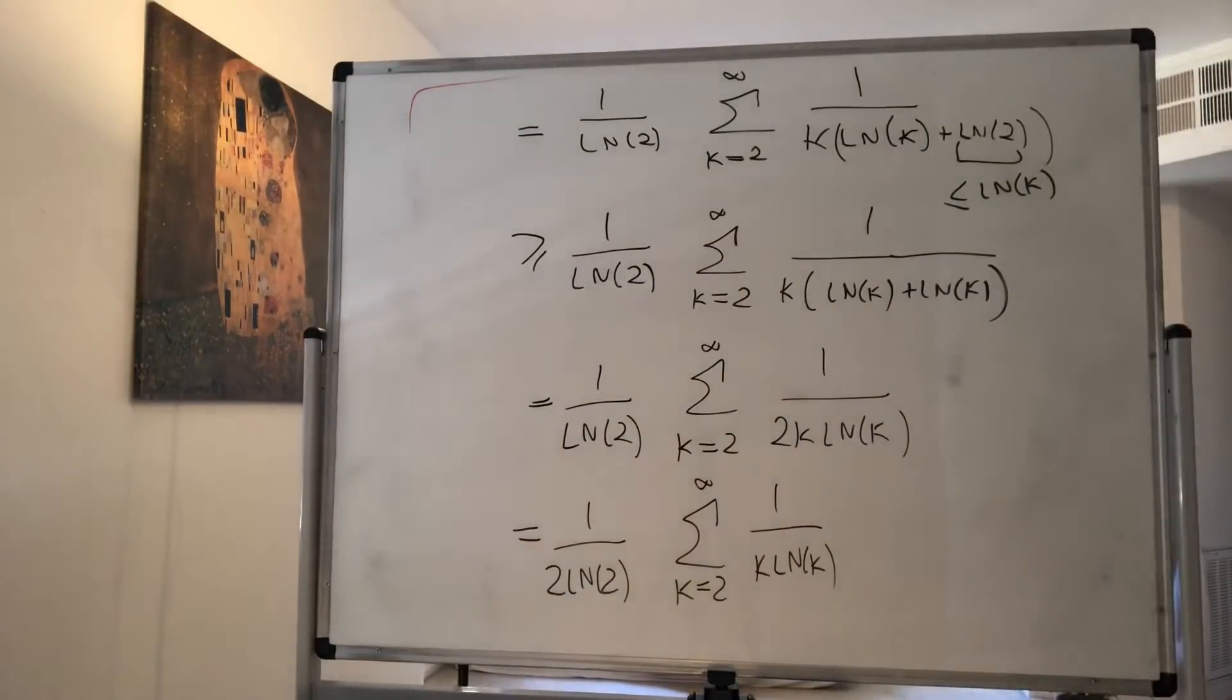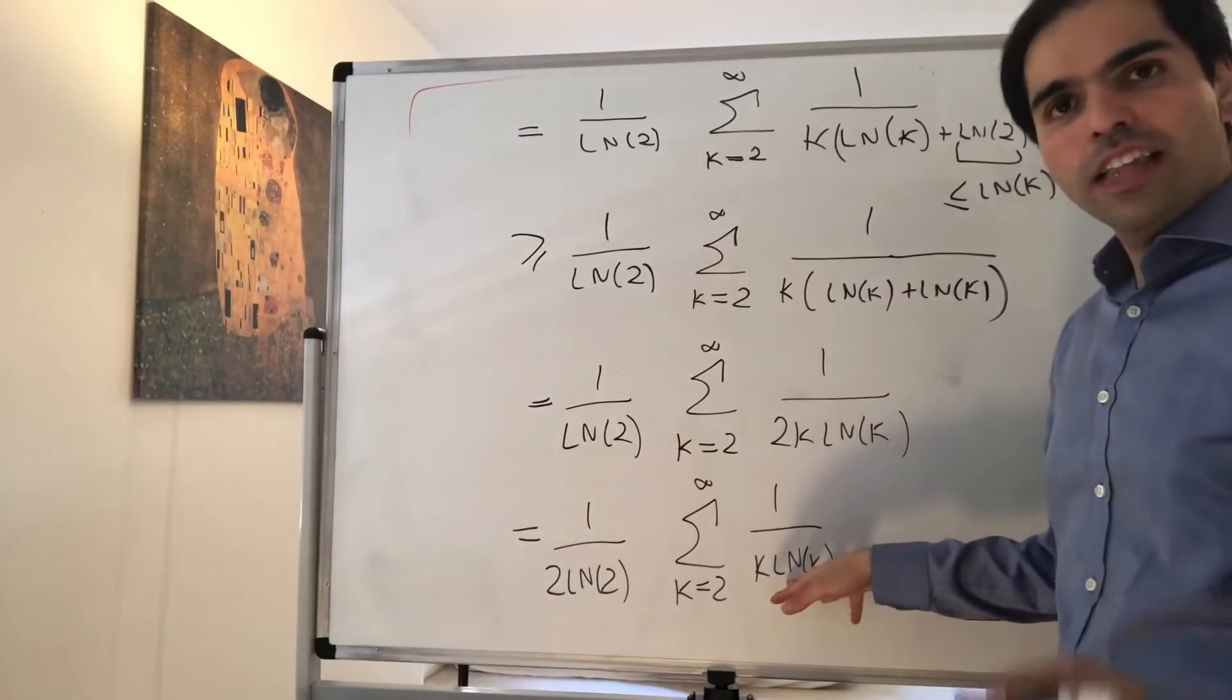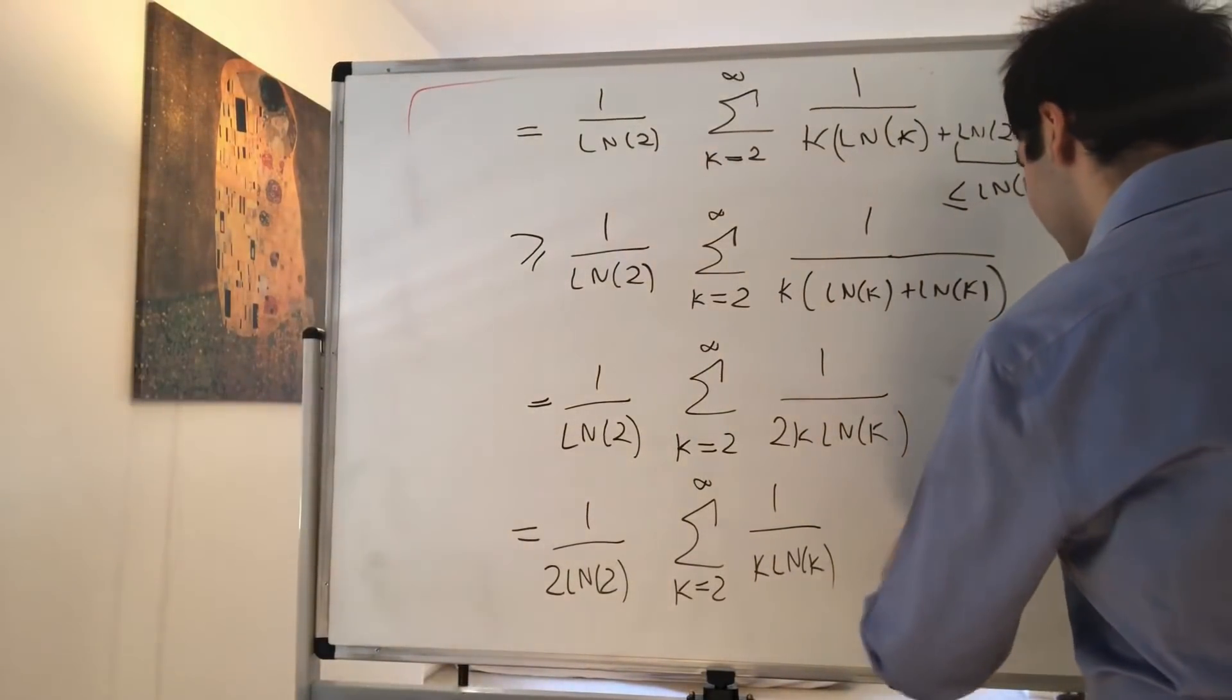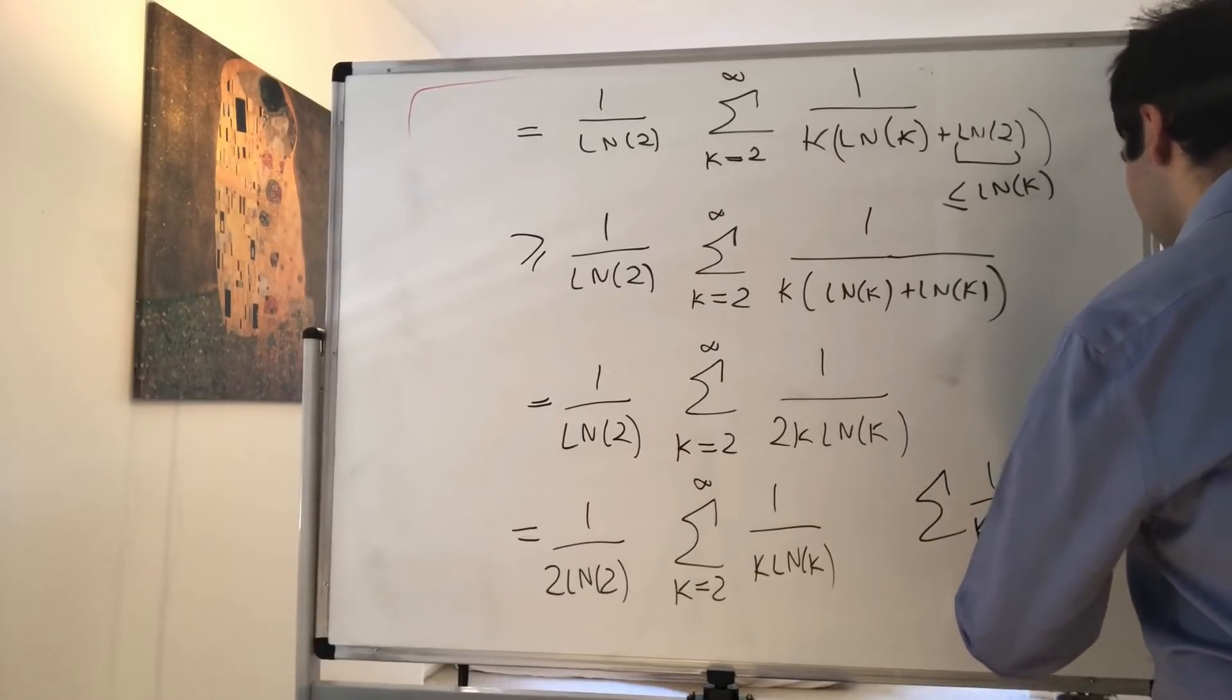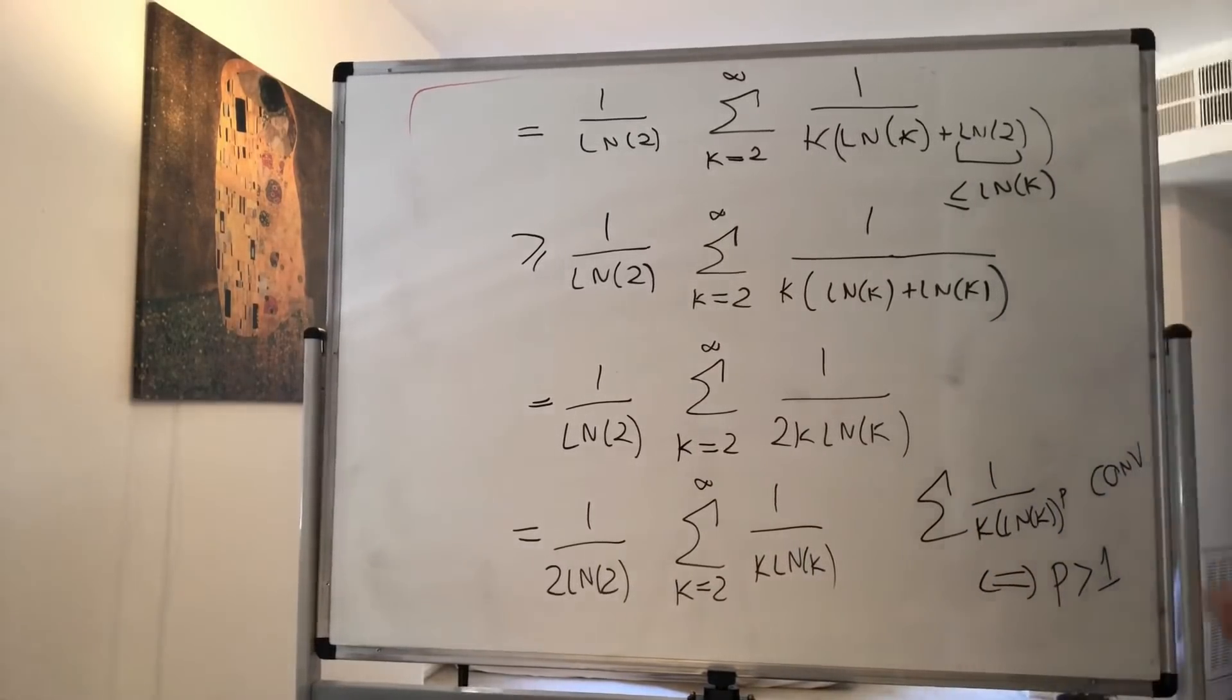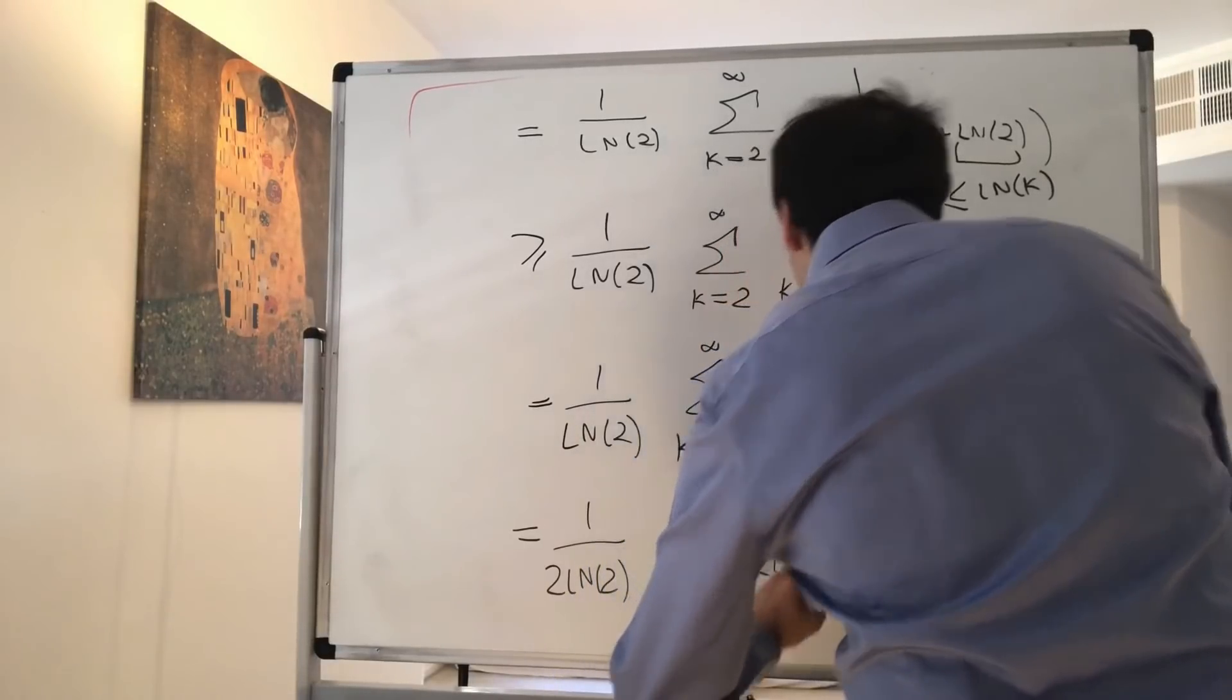However, in a previous video, we've shown that 1 over k ln of k to the p^th power is convergent if and only if p is greater than 1. So this thing, 1 over k ln of k to the p converges if and only if p is greater than 1. However, here p is equal to 1, so this thing is actually divergent. So it equals to infinity.